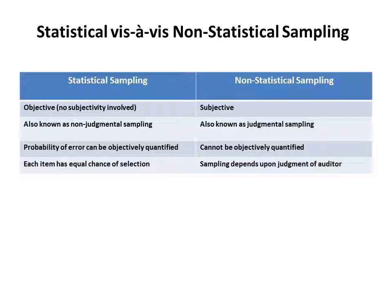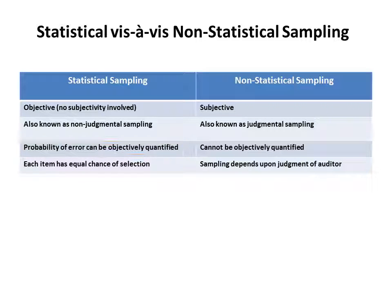Another main distinction between statistical and non-statistical is that in statistical sampling, the probability of error can be quantified. For example, if my total population is 100 and my sample size is 10, and out of 10 I get an error of 1, I can assume there is a 10% error rate. That cannot be assumed in non-statistical sampling. This is a very important point for SISA exam: when probability needs to be objectively quantified, we need to select statistical sampling.